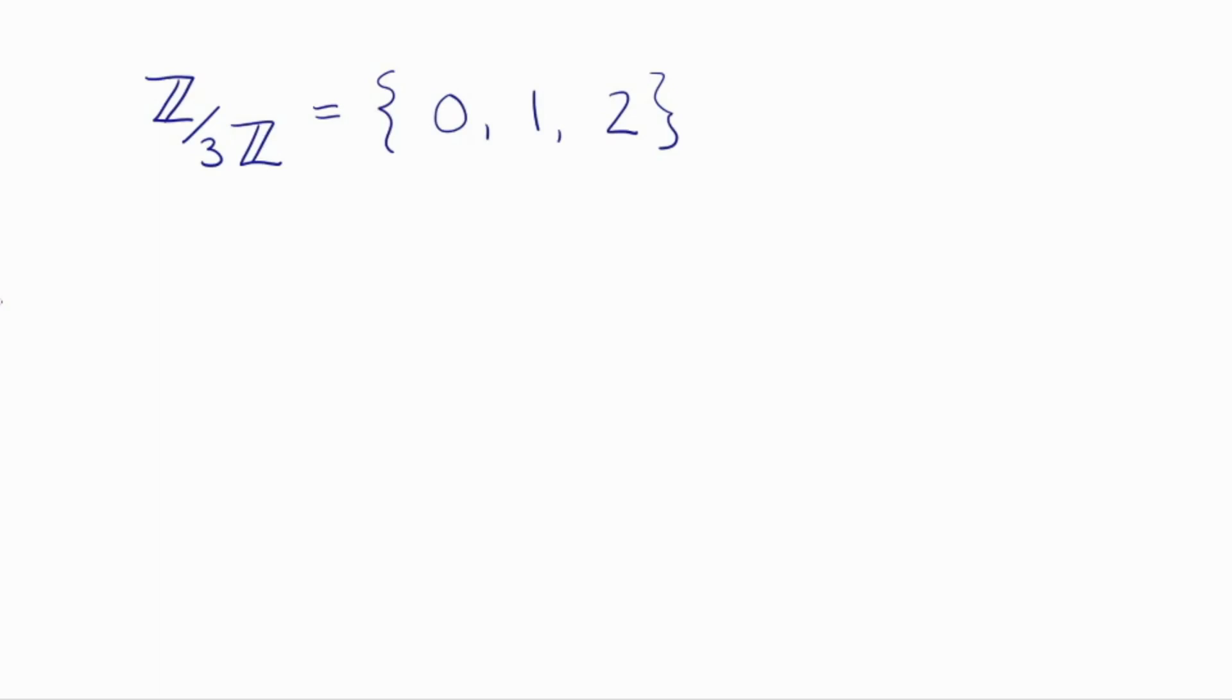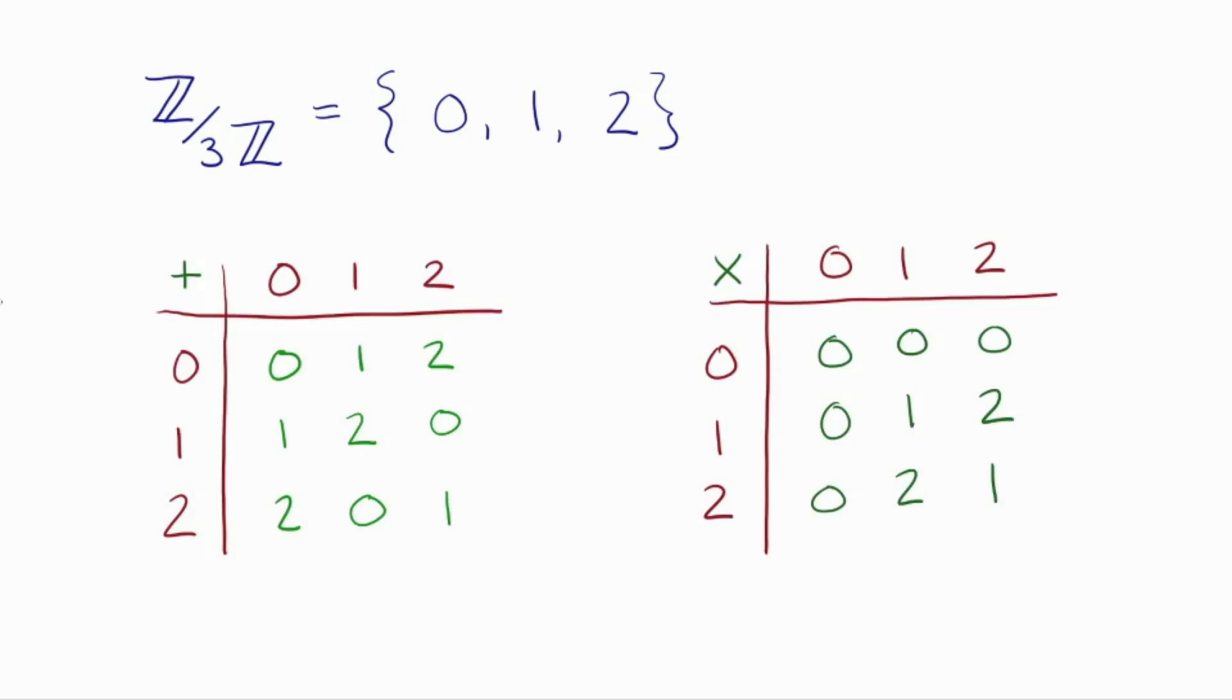What you see here is two tables, an addition table and a multiplication table. For example, 1 plus 2 is 0 mod 3, and 2 times 2 is 1 modulo 3. So this is the full information for the universe modulo 3. Everything we might want to know about Z mod 3Z is a consequence of this finite list of facts.